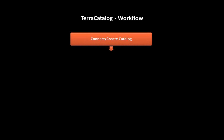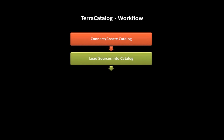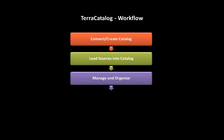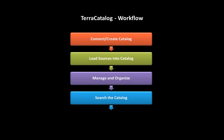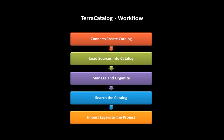Let's review a typical workflow when working with Terra Catalog. First, I create a new catalog or connect to an existing catalog using Terra Catalog Manager. Next, I import sources to the catalog. Once the data is loaded, I can perform various catalog management tasks, including modifying layer information, setting catalog user permissions, and performing cross database maintenance tasks. Now the catalog is ready for authorized users to search for the data they need and import it into their projects.